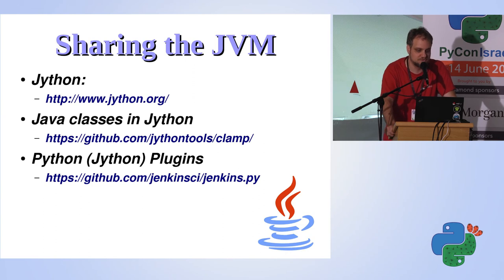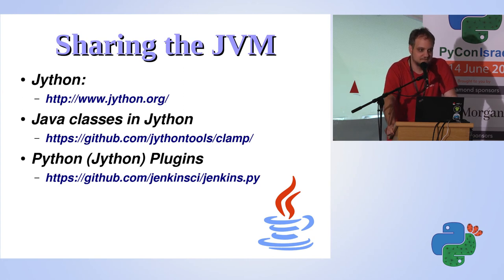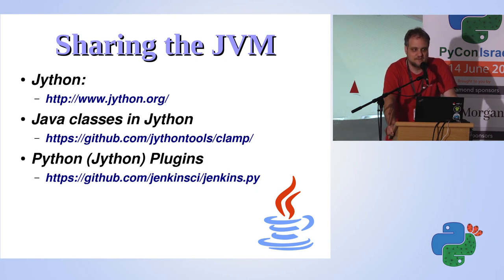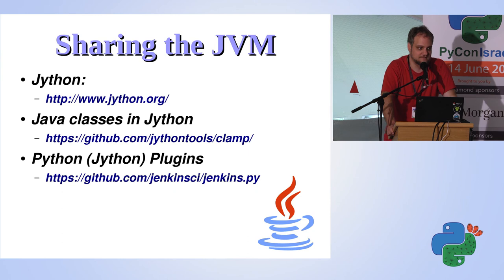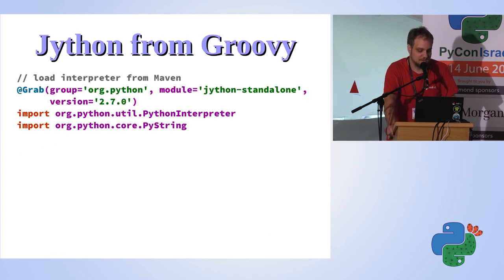Unfortunately Jython doesn't give you an easy way to do that — you actually need to write Java code to provide the Java class structure. There is a project called clamp that lets you do it with Jython, but you still need to write Java. There's also the Jython Plugins project which gives a bit more automation around it, but it's unfortunately unmaintained — the last build was from a couple of years ago. And this is Java: your development process becomes writing Java classes, writing Python implementation, running build tools, getting a Jenkins plugin file, starting Jenkins, installing the plugin — that's not why we use Python.